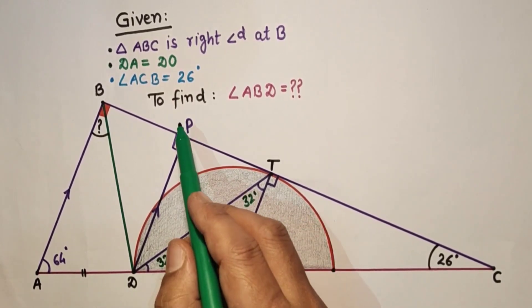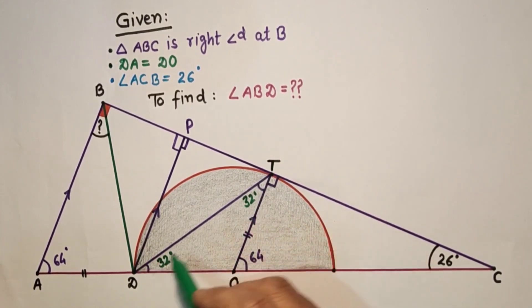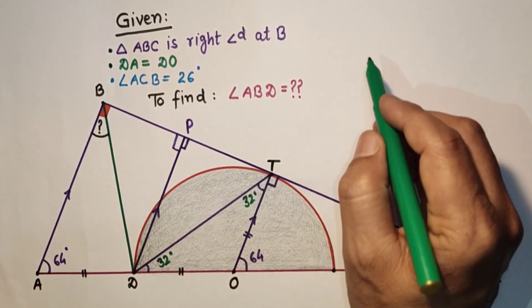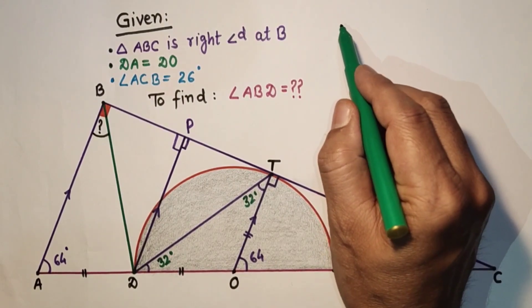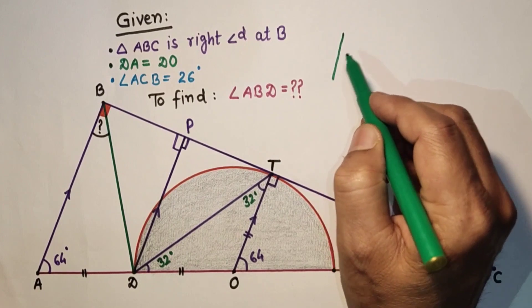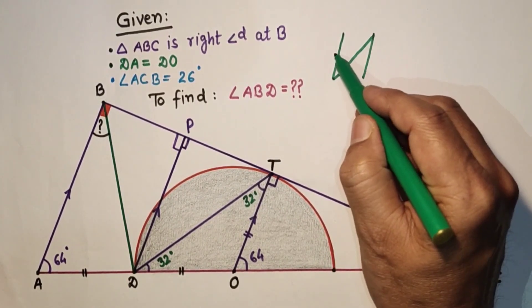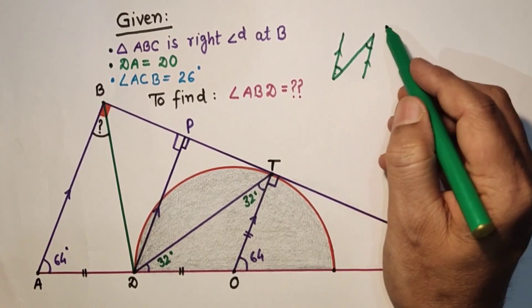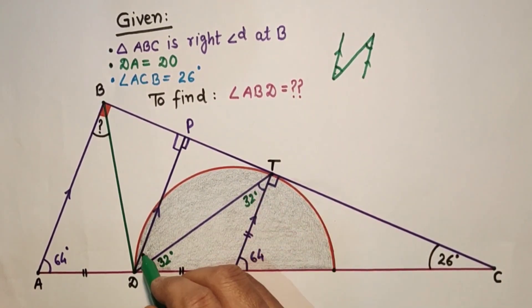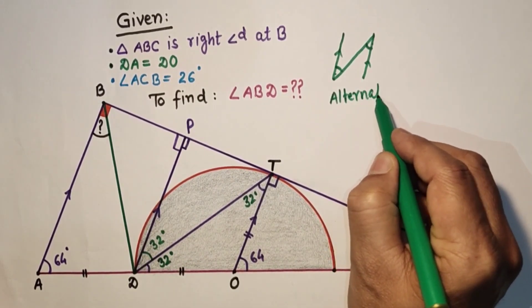Now, since PD is parallel to TO, alternate angles will be equal. And alternate angles means the corner angles of Z pattern. If these two lines are parallel and these two lines are parallel, these corners will be alternate angles and these two will be equal. Here 32 is equal to this 32, interior alternate angles are equal.